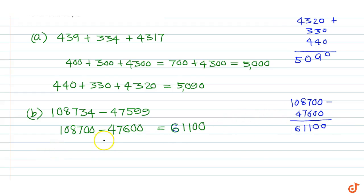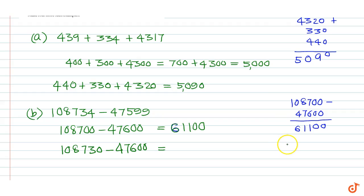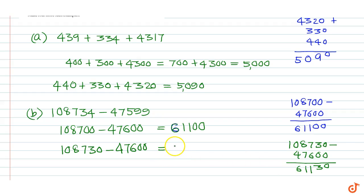By rounding off to nearest tens we get 108730 minus 47600, which is equal to 108730 minus 47600, which is equal to 61130.